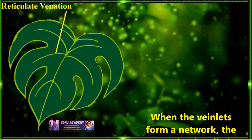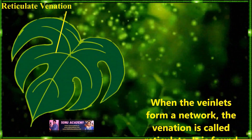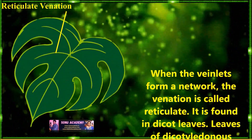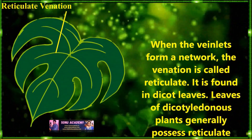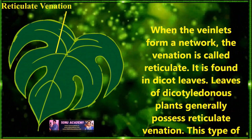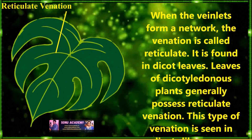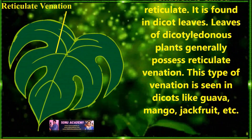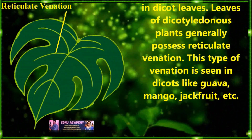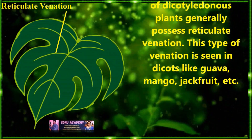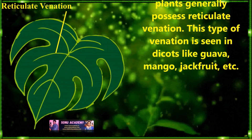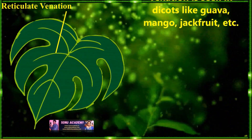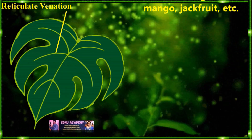Reticulate venation: when the veinlets form a network, the venation is called reticulate venation. It is found in dicot leaves. Leaves of dicotyledonous plants generally possess reticulate venation. This type of venation is seen in dicots like guava, mango, jackfruit, etc.